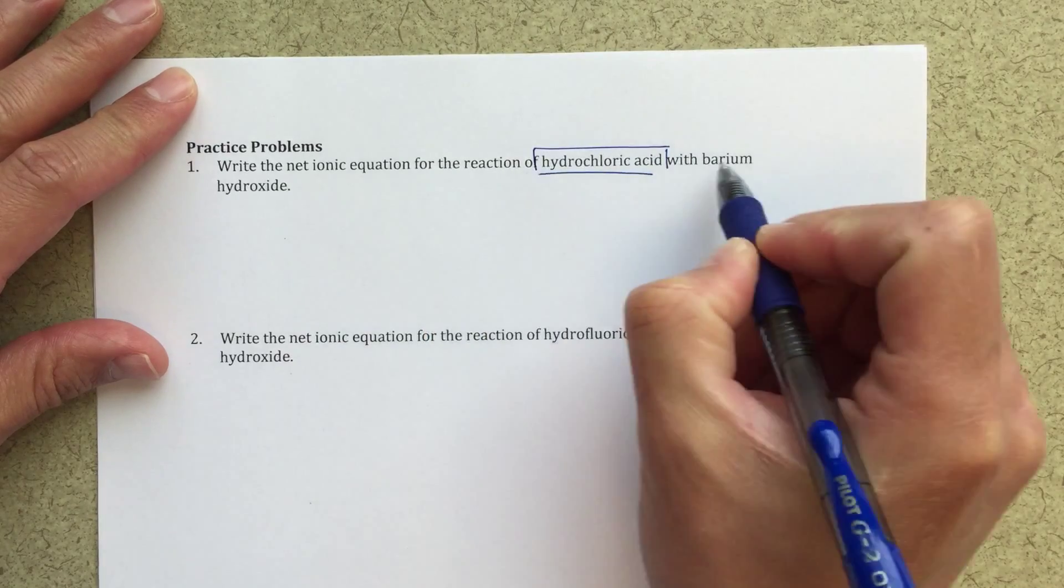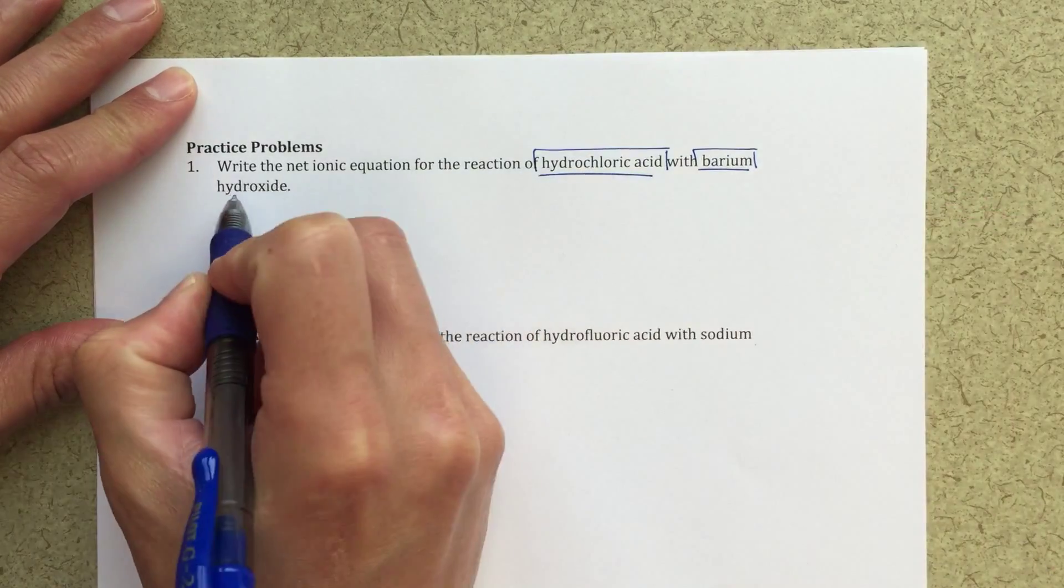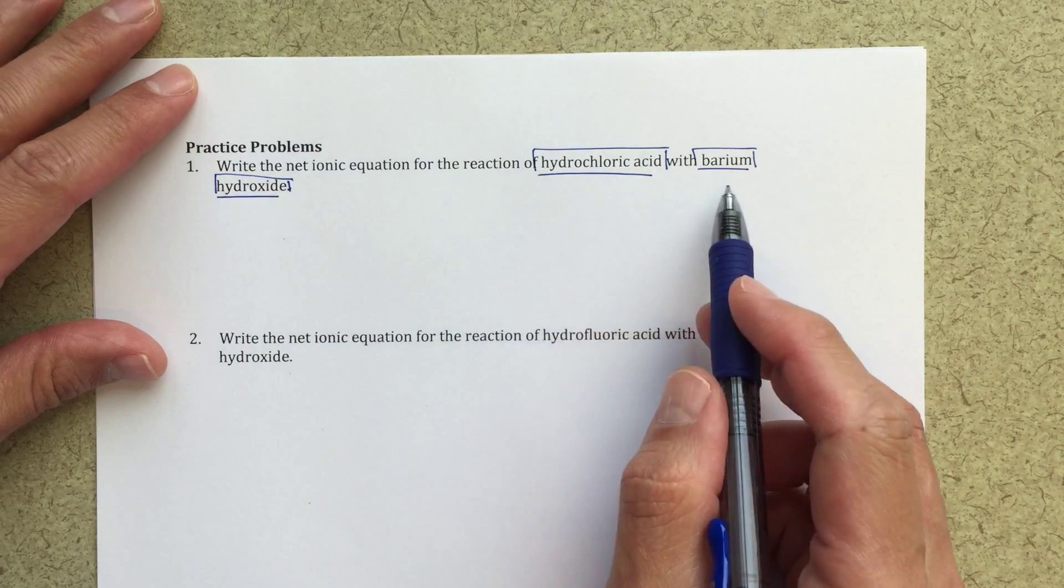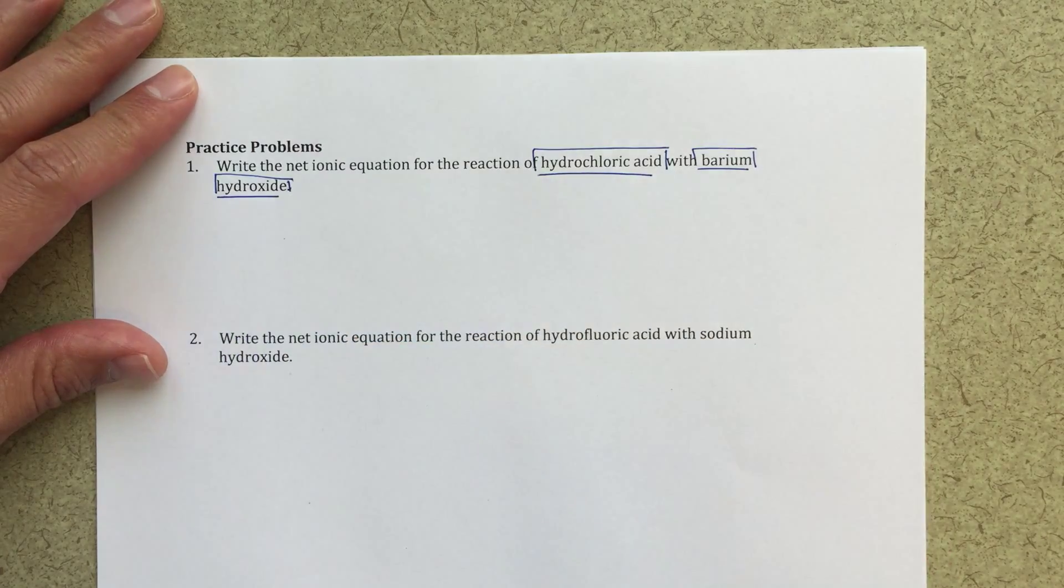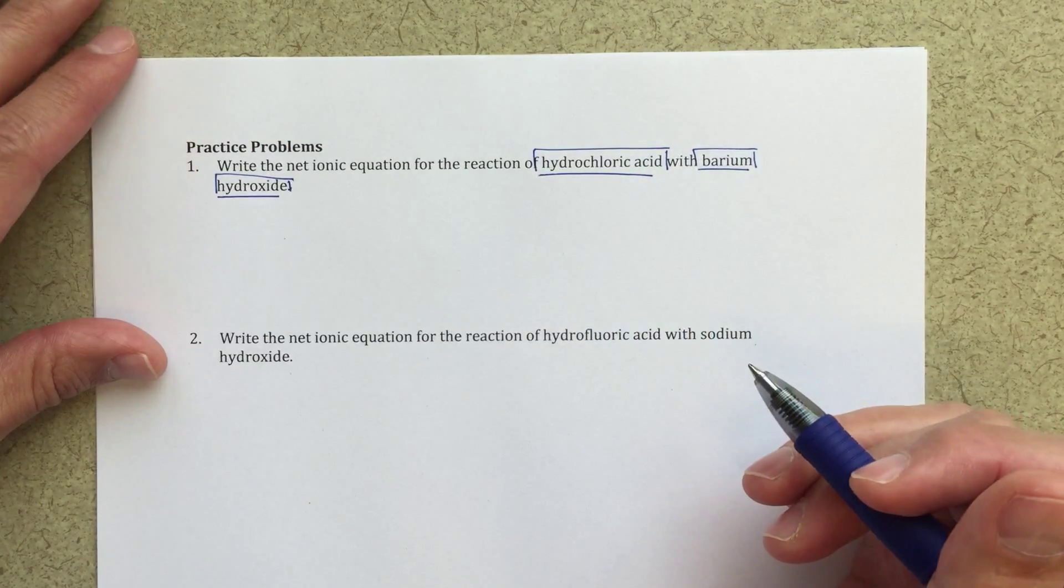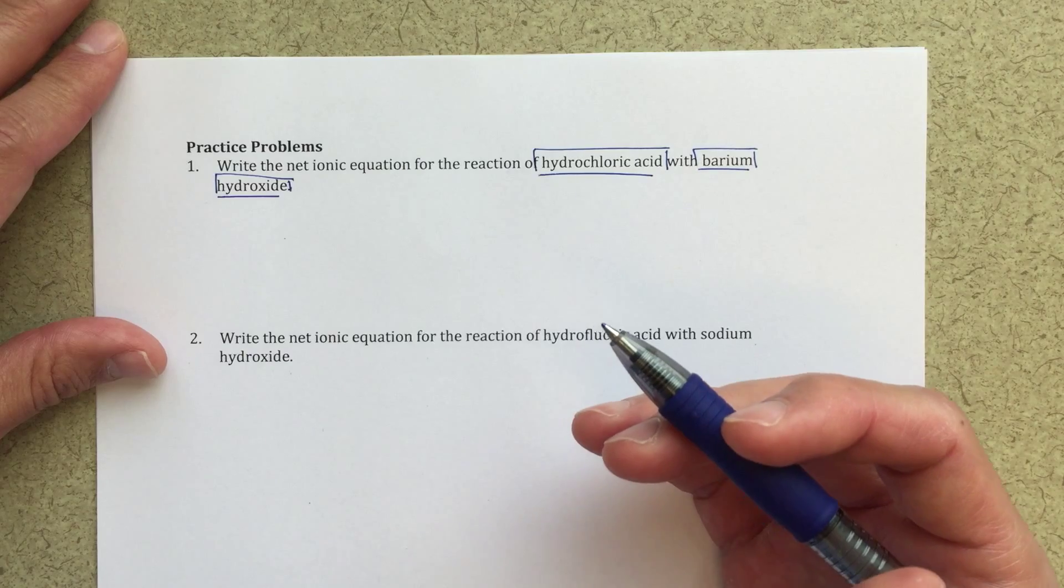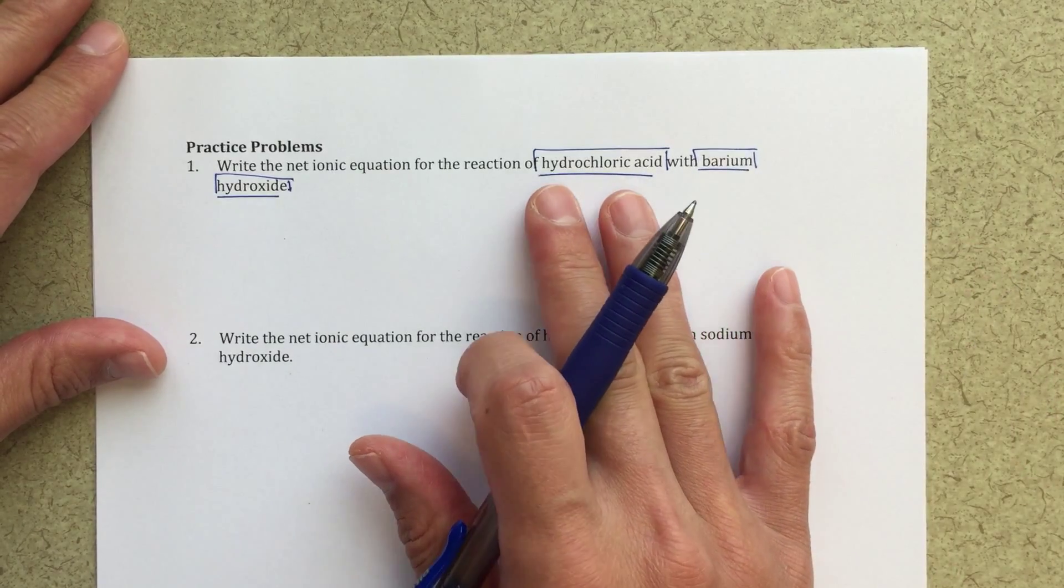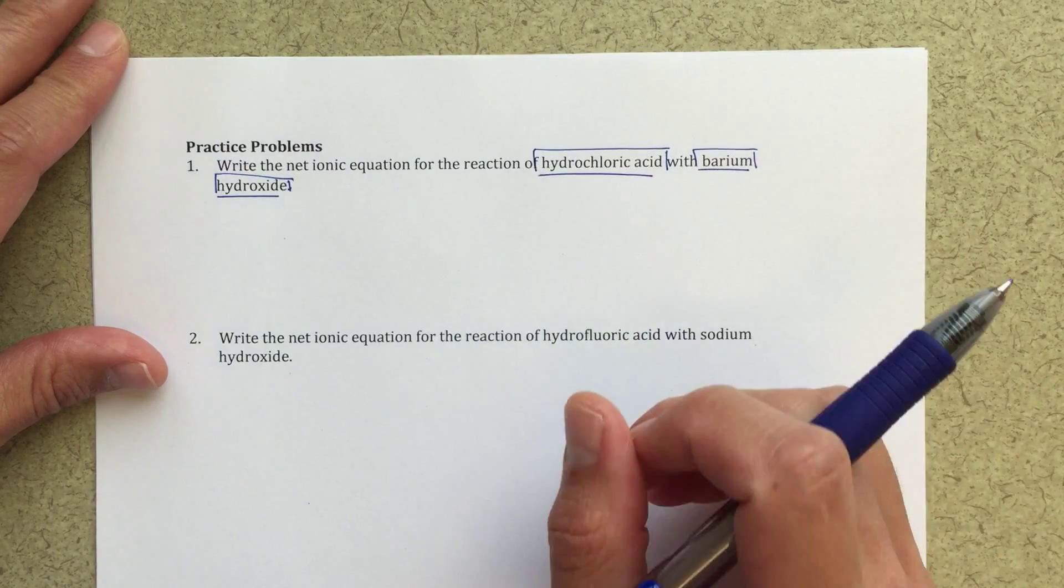The first thing I'm going to be doing here is highlighting the relevant information. Hydrochloric acid is going to be reacted with barium hydroxide. I know that hydrochloric acid is a strong acid, it's on our list of strong acids, so it'd be a good idea to get comfortable with that - HCl, strong acid.